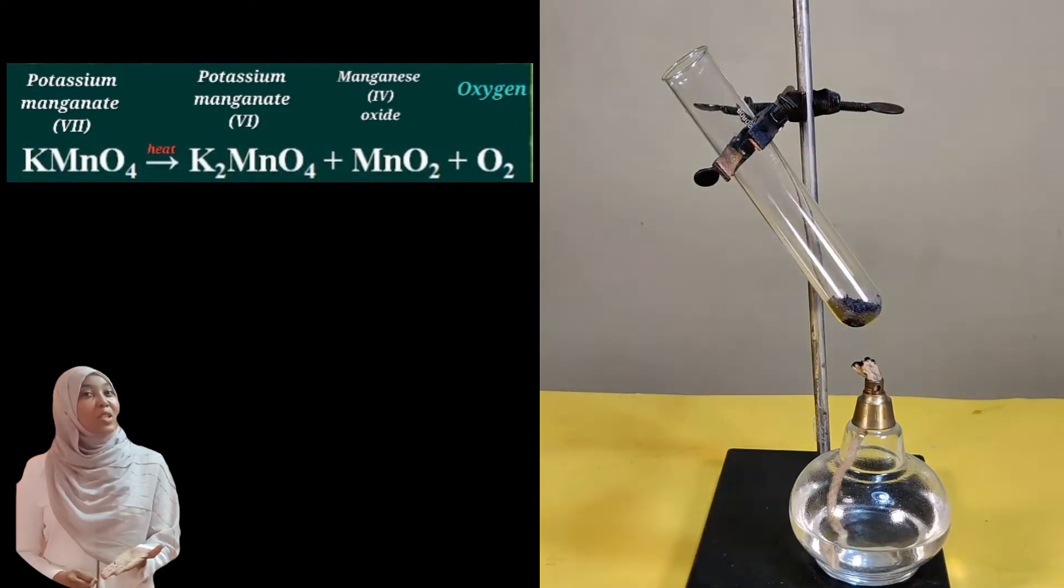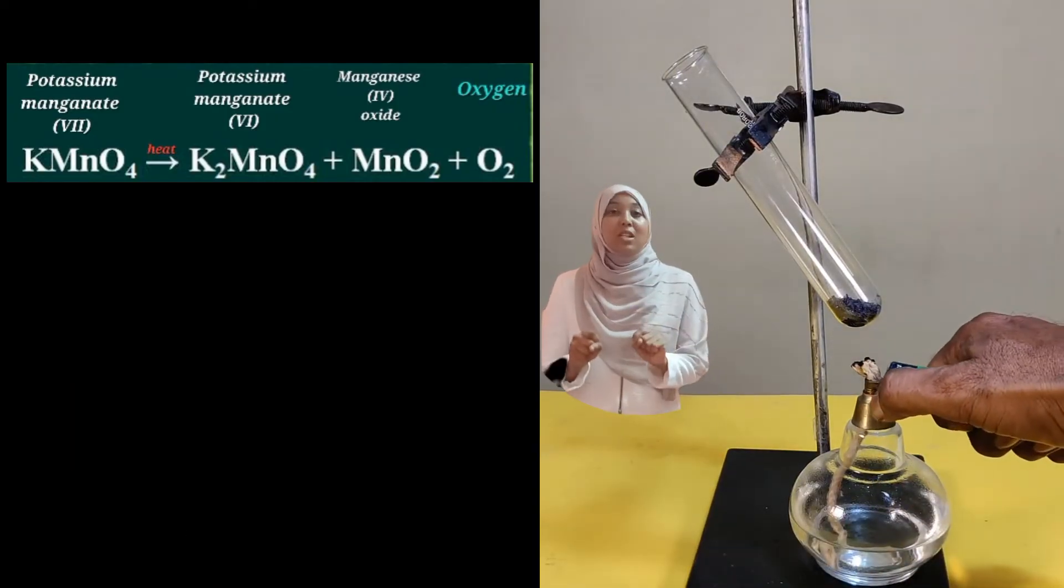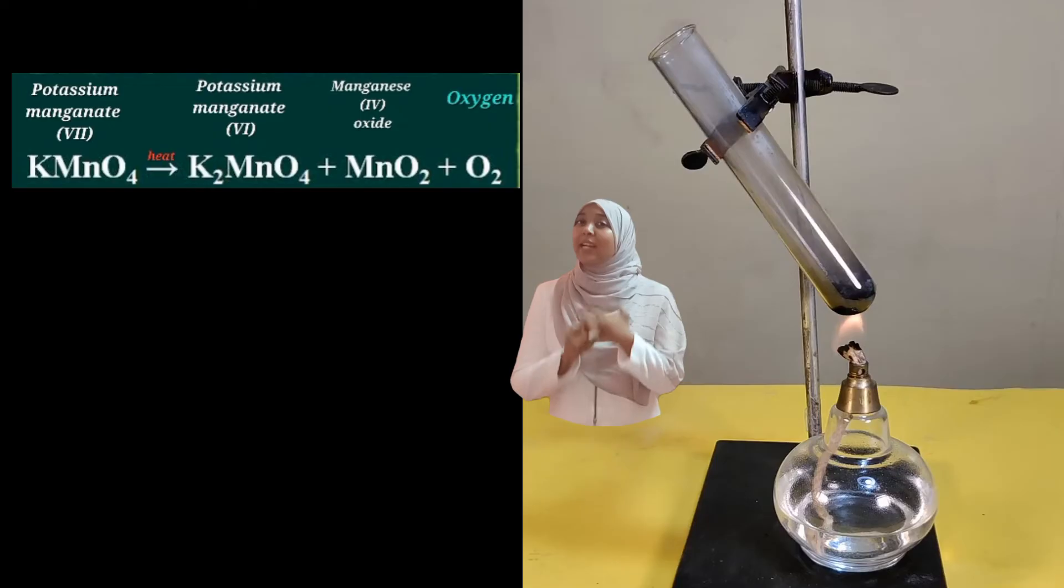The first product is oxygen gas. The other two products are number one: potassium manganate 6 (K2MnO4), and number two: manganese 4 oxide (MnO2).